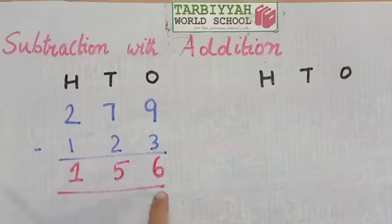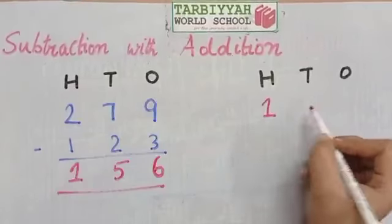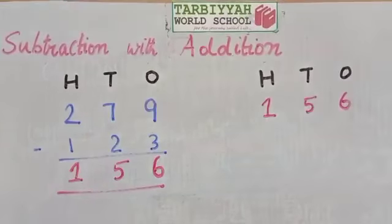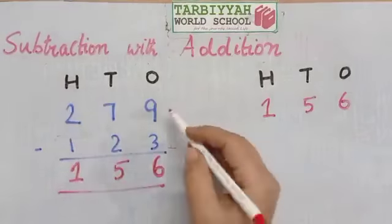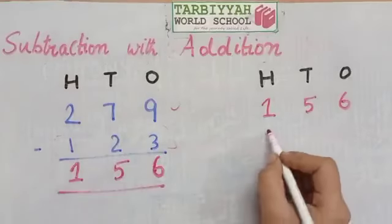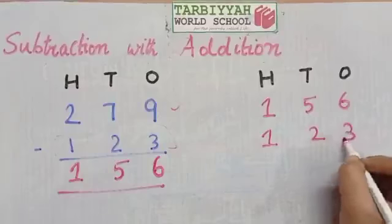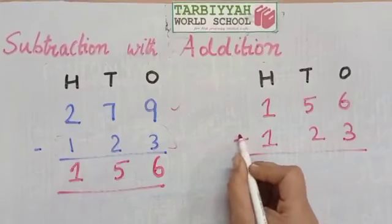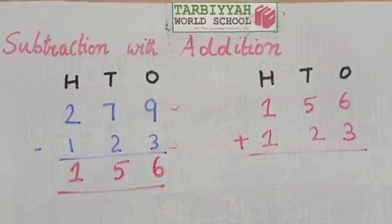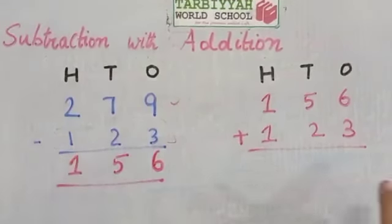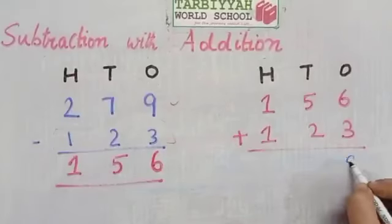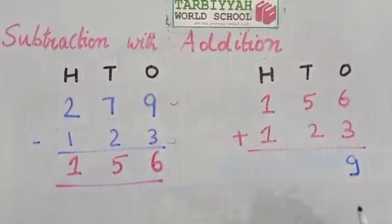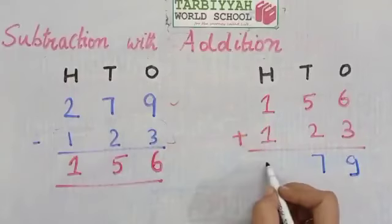The answer we got is 156. So we write 156 and then write the second number we subtracted from it, which is 123. We will check whether our answer is correct by adding these numbers: 6 plus 3 is 9, 5 plus 2 is 7, and 1 plus 1 is 2.